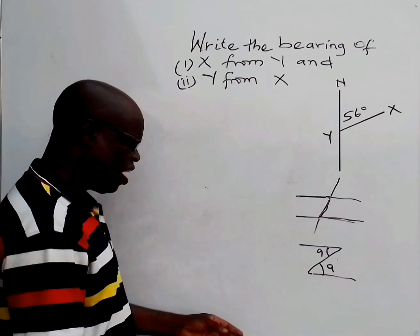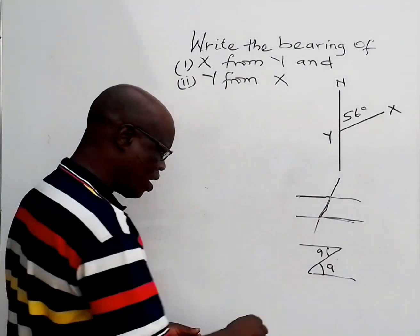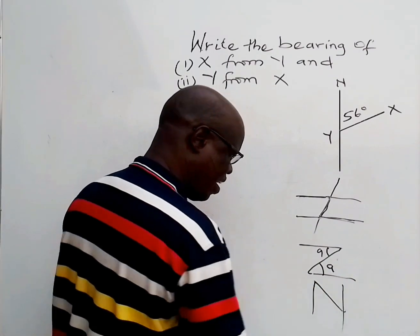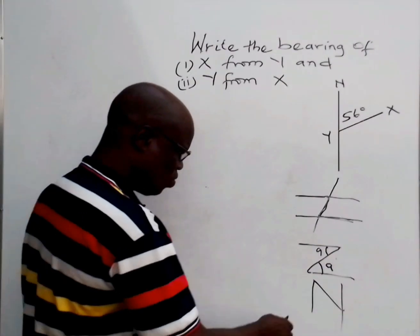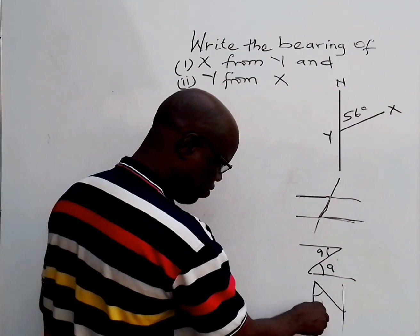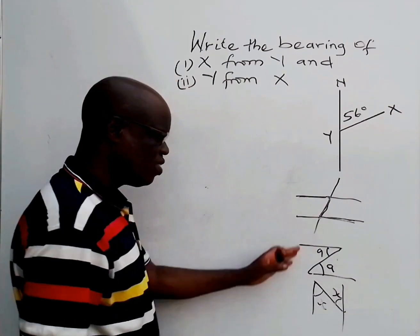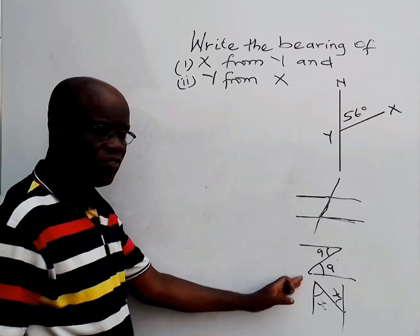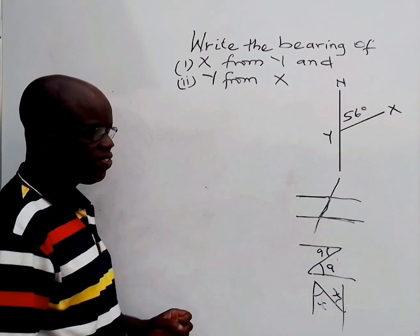If you flip this Z, it can also look this way. Just flip it a little bit, so you have this angle. If this one is X, this also is X. So this type of angle is referred to as alternate angle. You should note this.